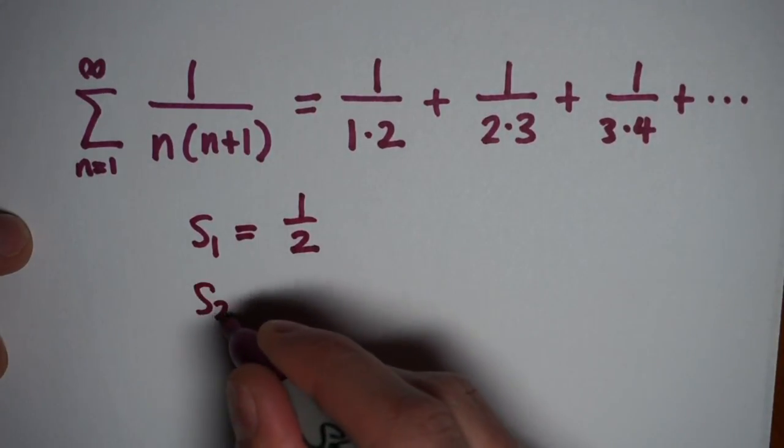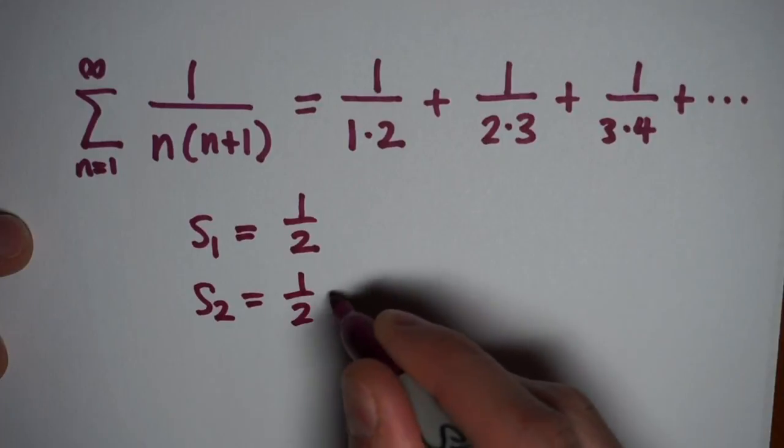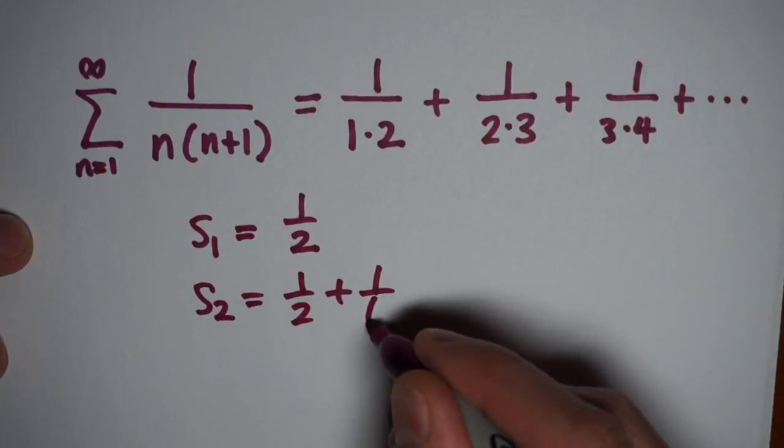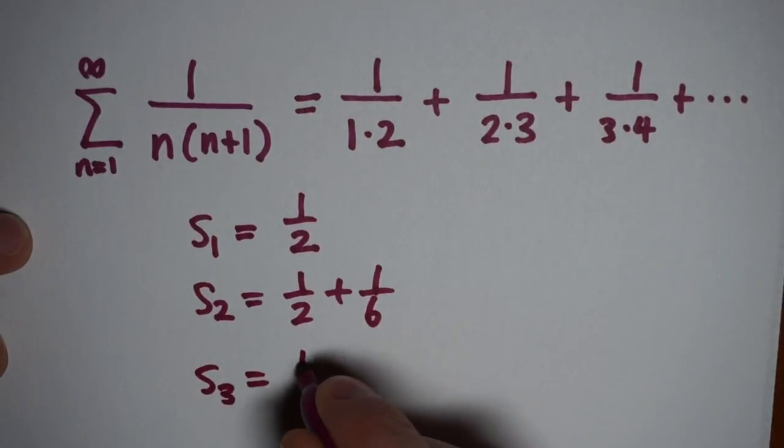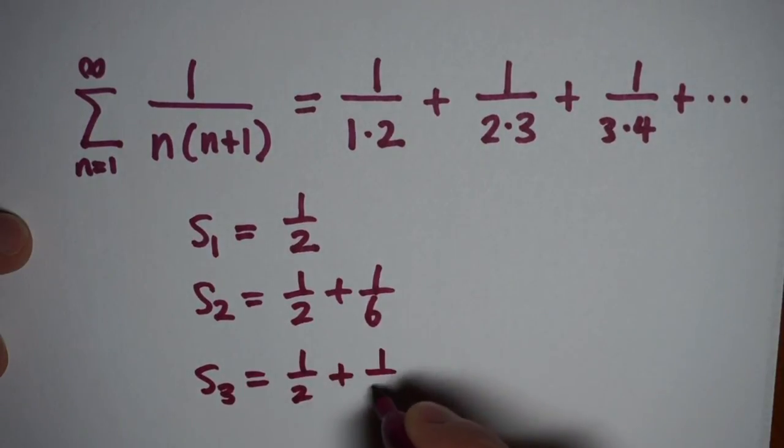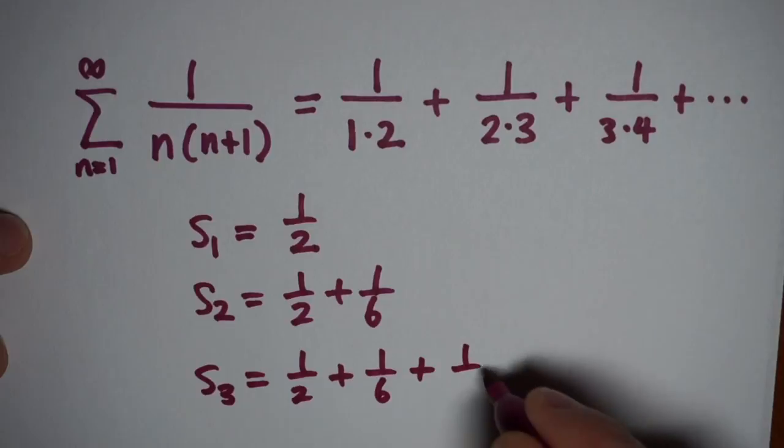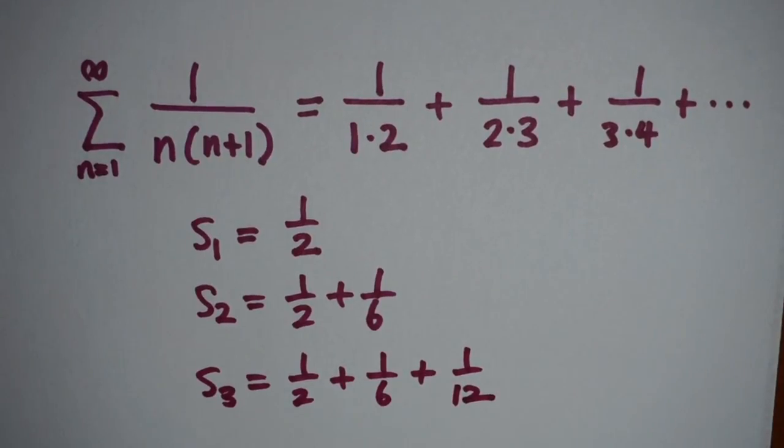So my first partial sum is a half, just my first term. My second one is a half plus a sixth, which is my second term plus my first term. My third partial sum will be a half plus a sixth plus a twelfth, and I create a sequence of partial sums this way.